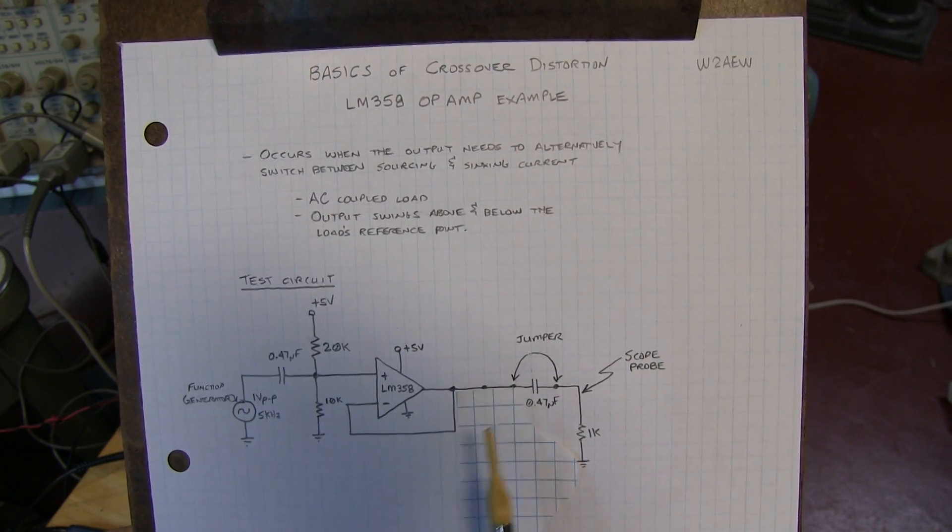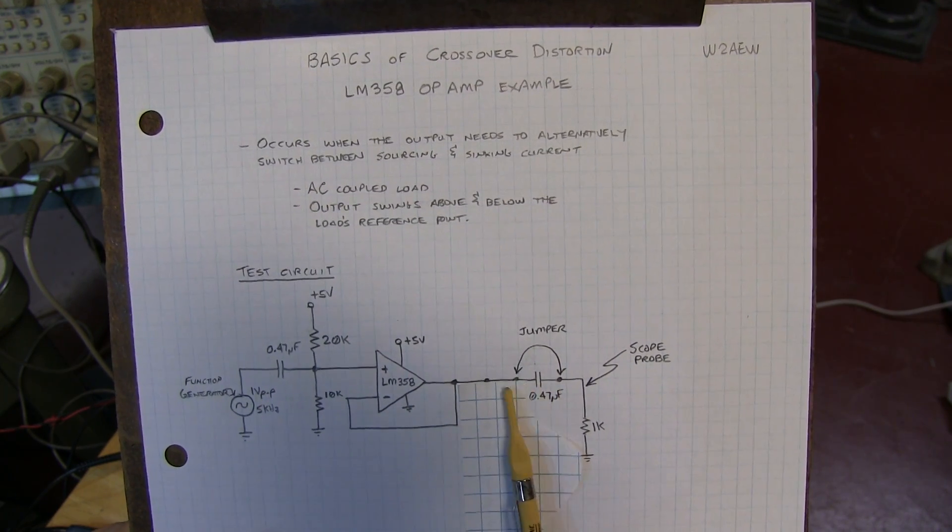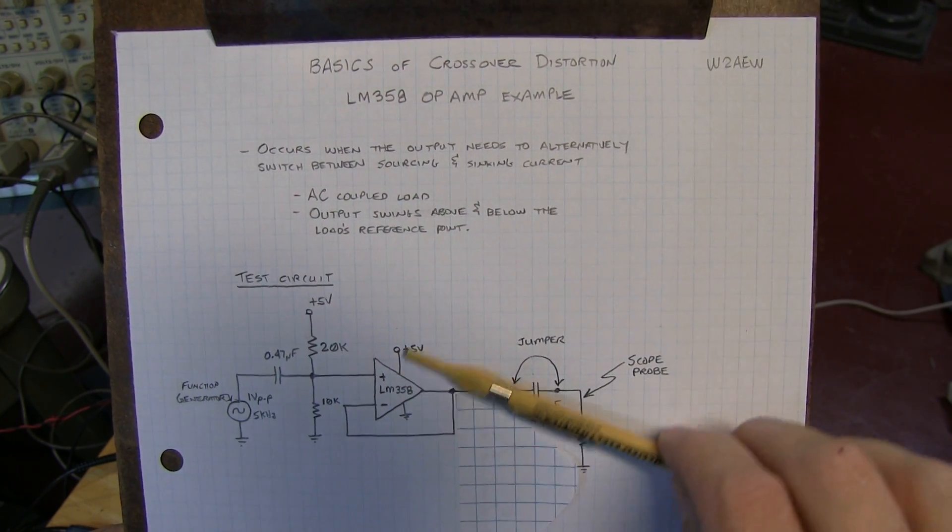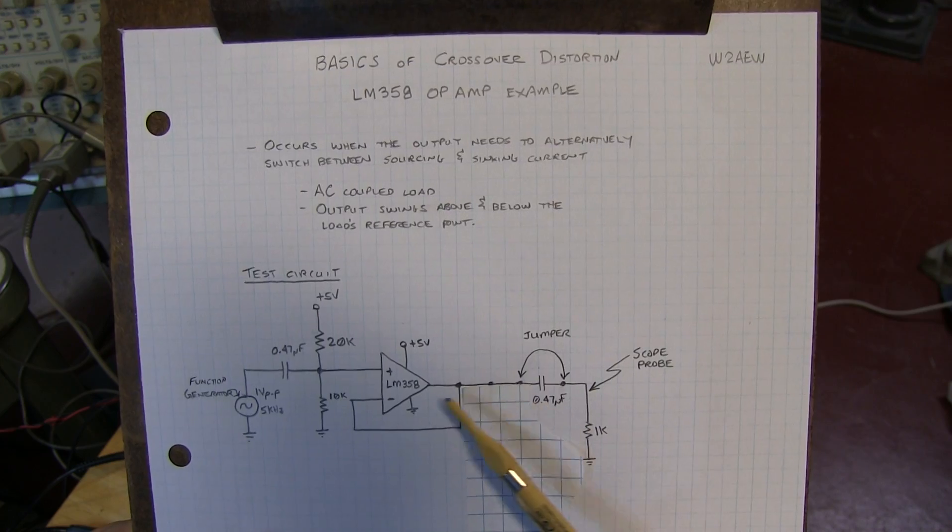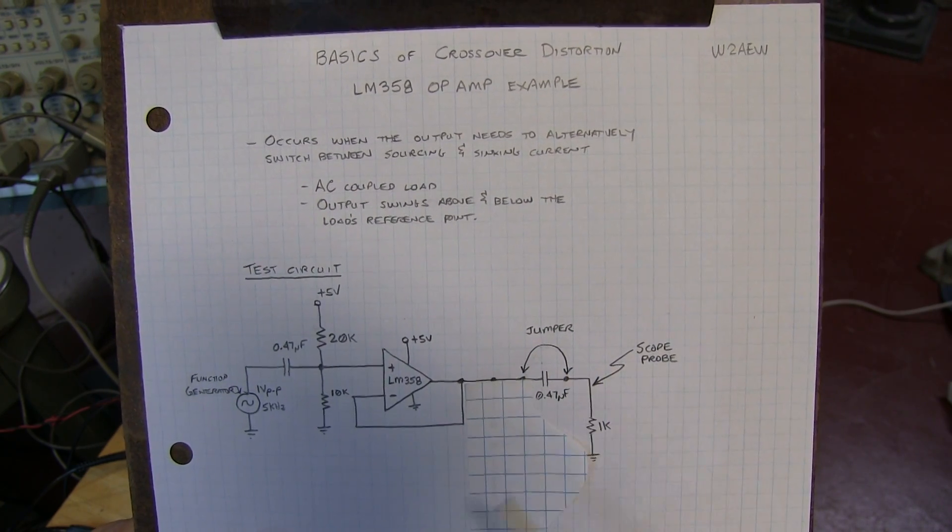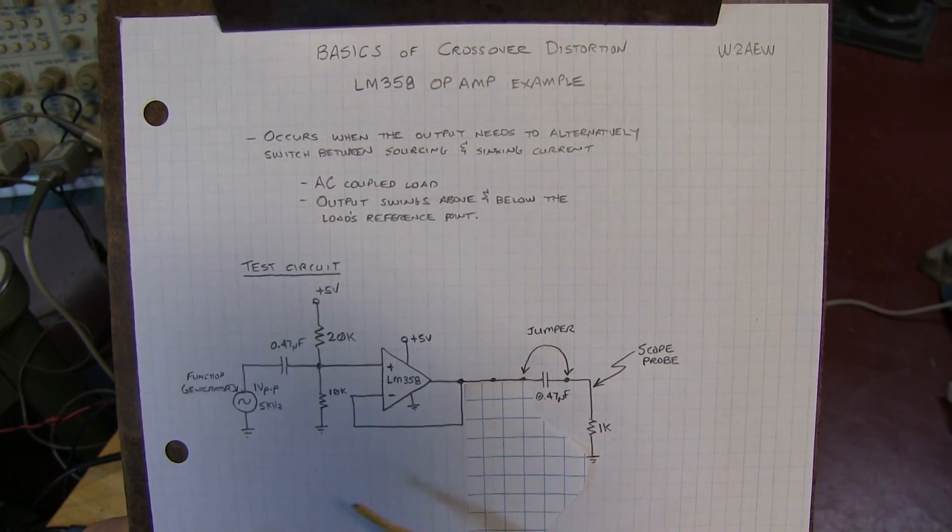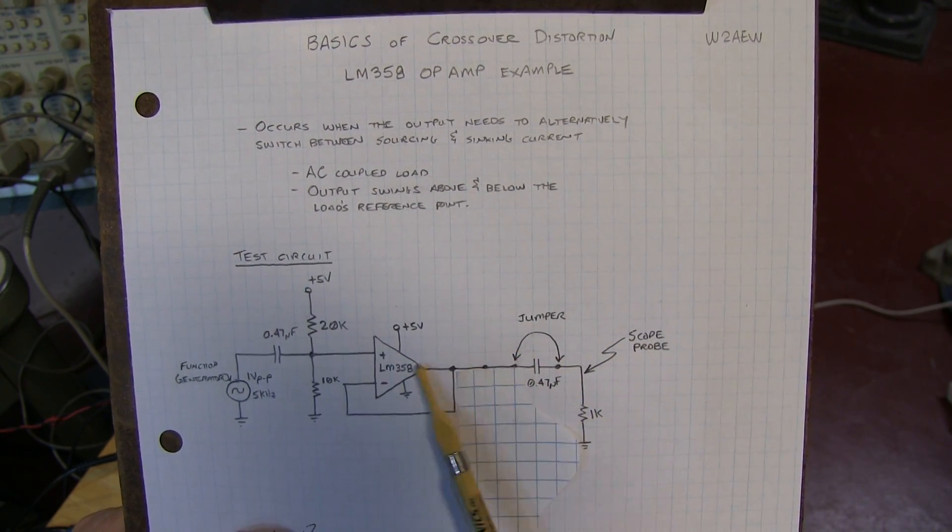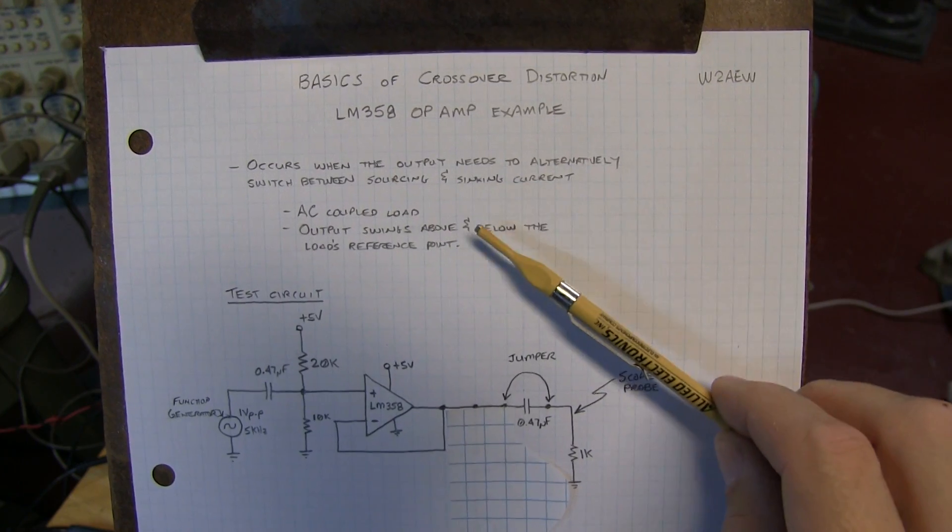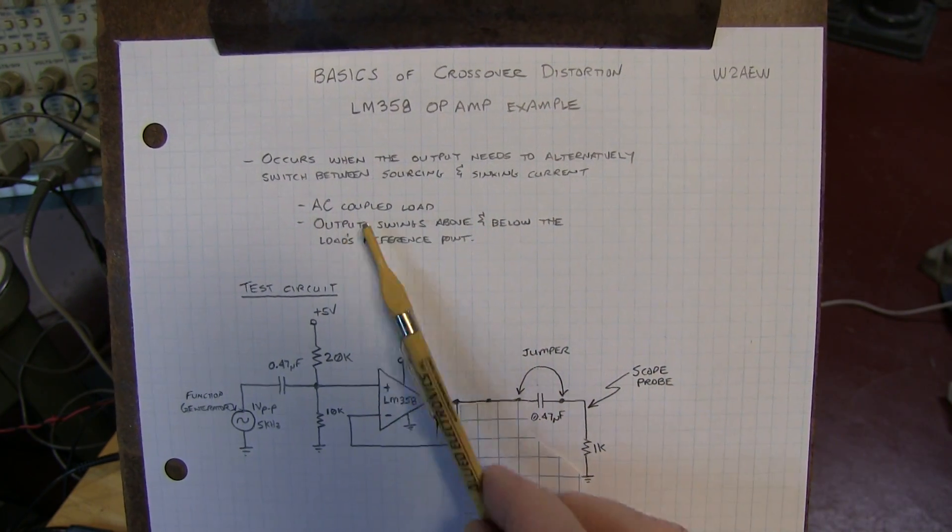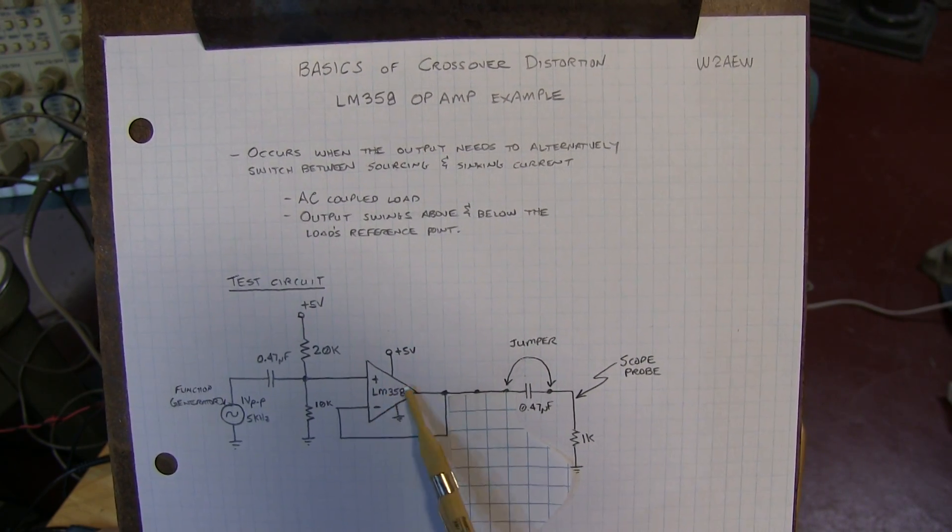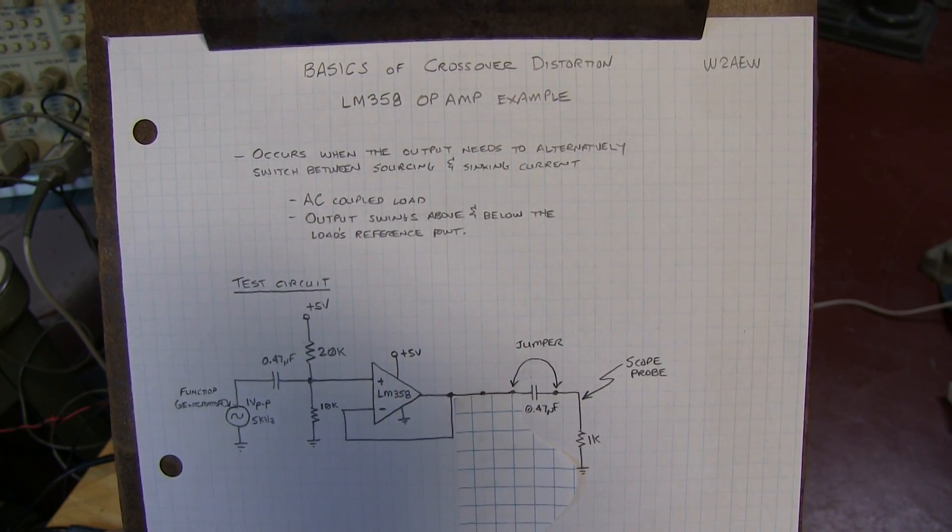In the case that I've got drawn here in this example, an AC coupled load could cause that to happen because during the positive half cycle of any signal, the output stage will source current through the capacitor into the load. But for the negative half cycle of a signal, the output needs to sink current from the load. So switching between that source and sink in an AC coupled load situation can lead to crossover distortion, depending on the design of the output stage.